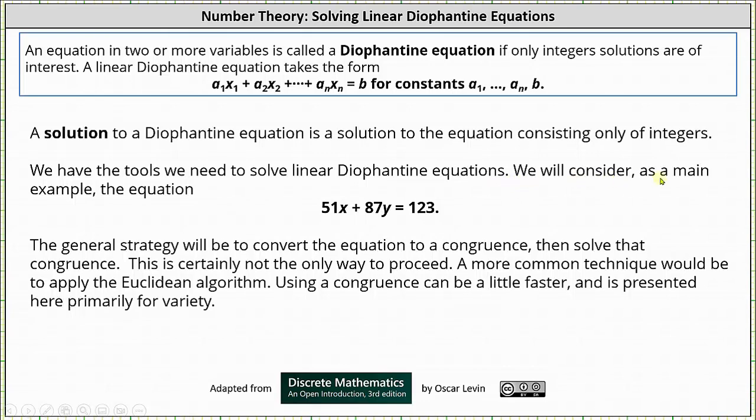We will consider as a main example the equation 51x + 87y = 123. The general strategy will be to convert the equation to a congruence, then solve that congruence. This is certainly not the only way to proceed.